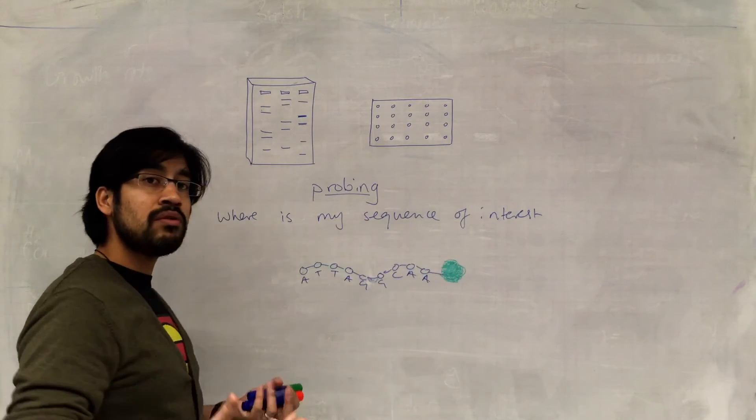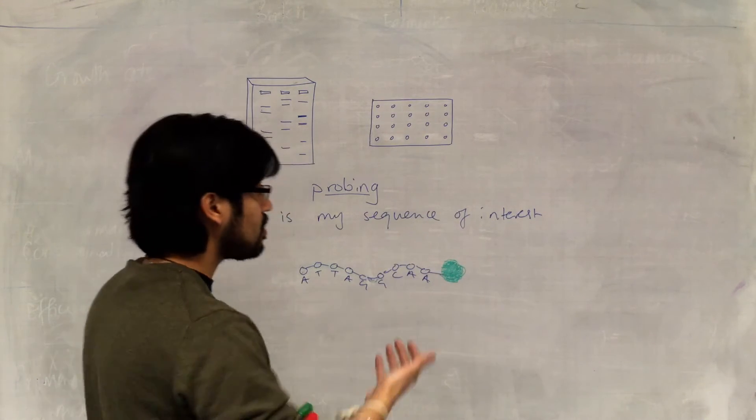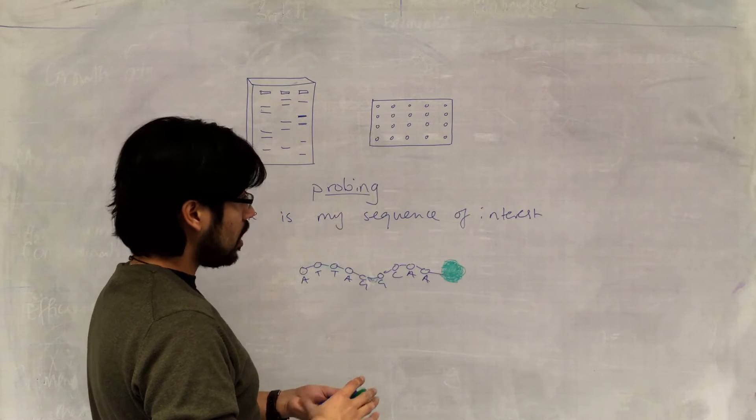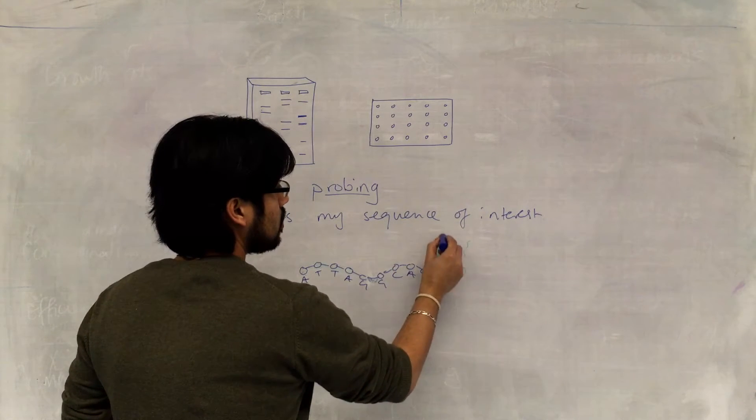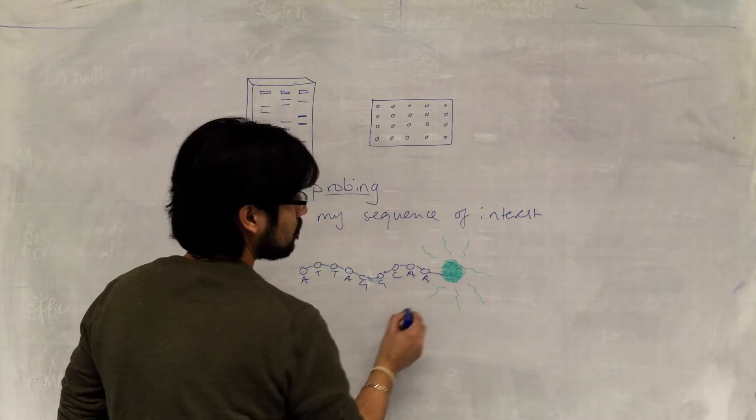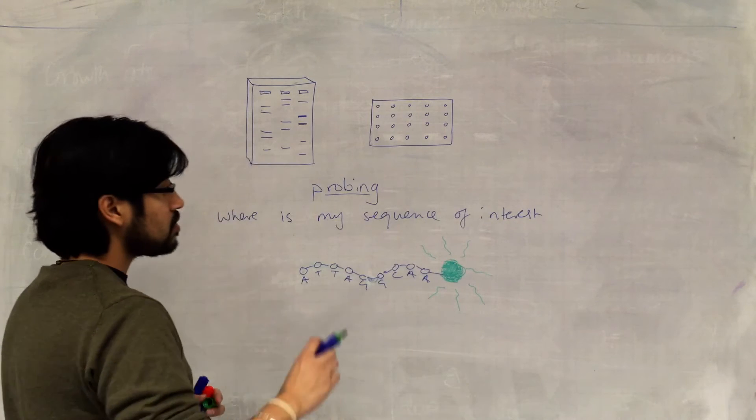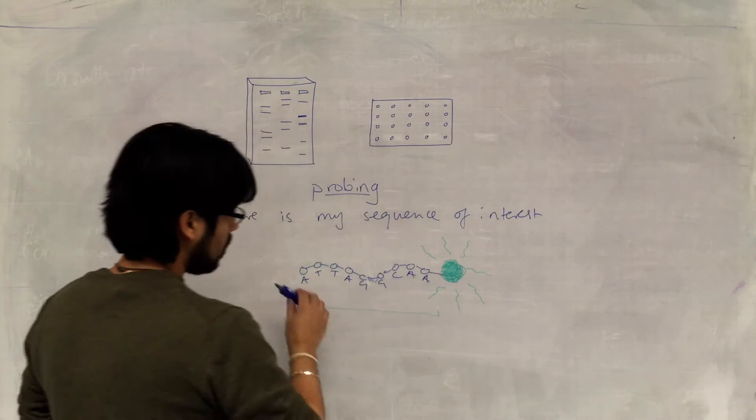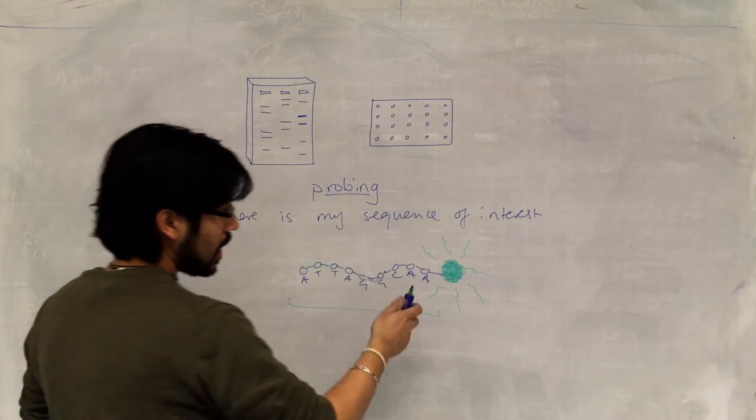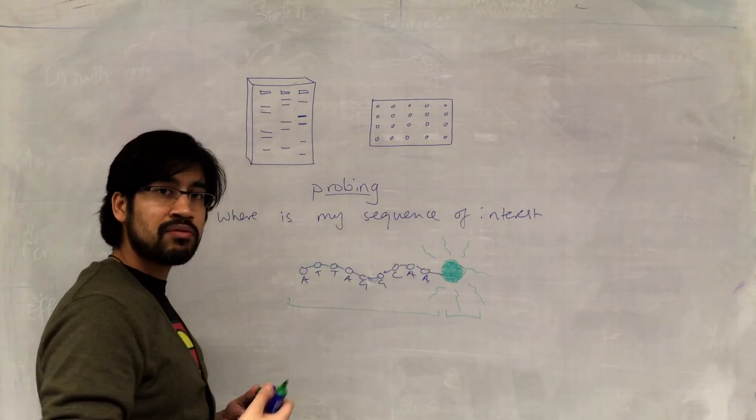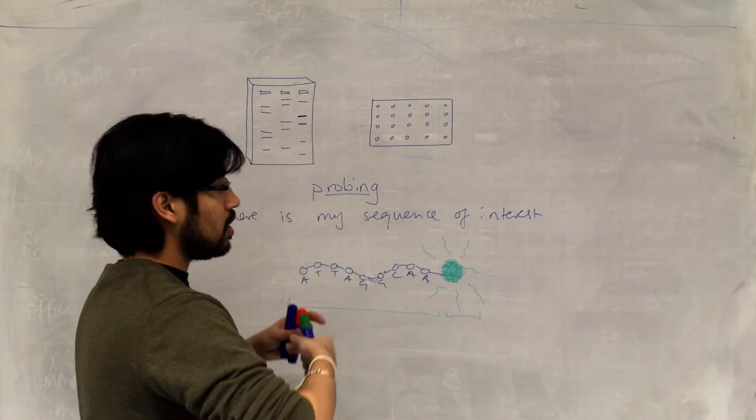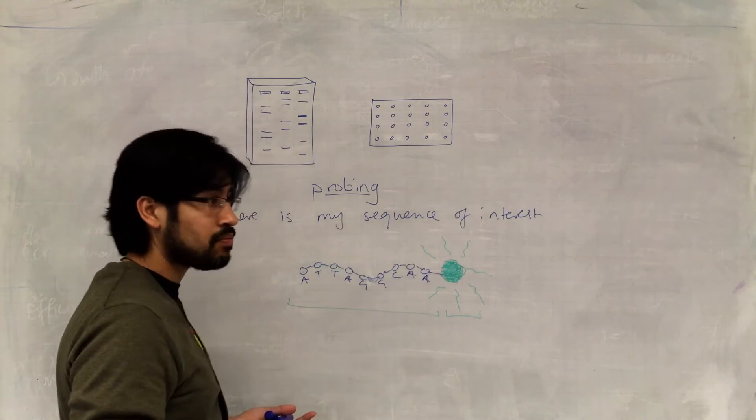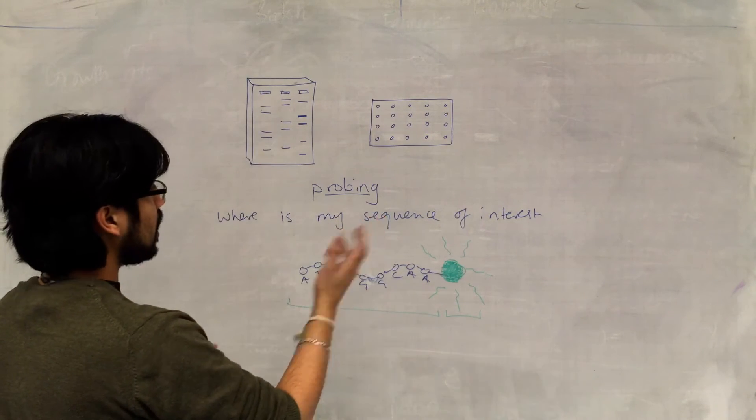So either it's radio-labeled, or it could be a fluorescent, which is nowadays more the case, because there's safety concerns with fluorescence versus radio-labeled. But essentially, they're sending out some kind of detectable signal. So that's the other property of a probe. So in its entirety, the probe has to have a sequence which is complementary to the sequence of interest, and it must have some kind of modification that sends out some form of radiation that we can detect. And that's really that.